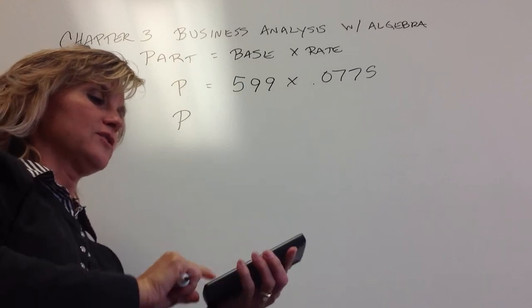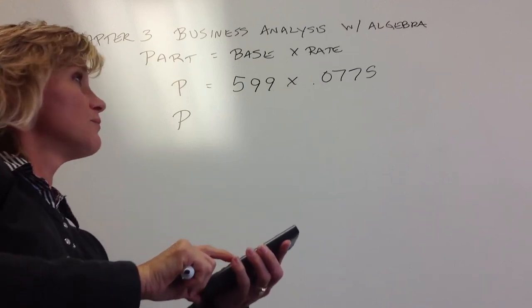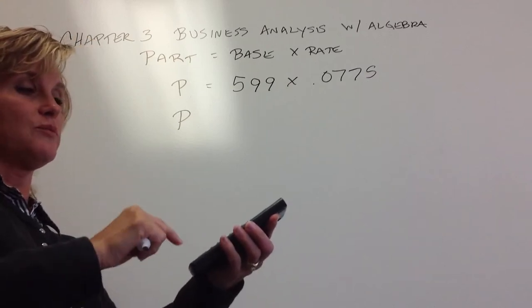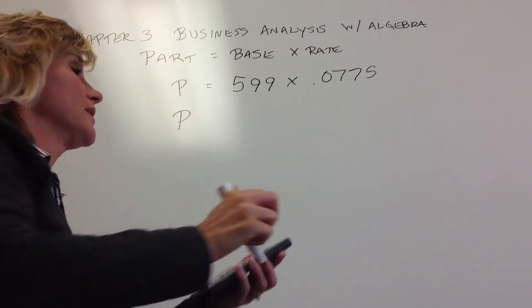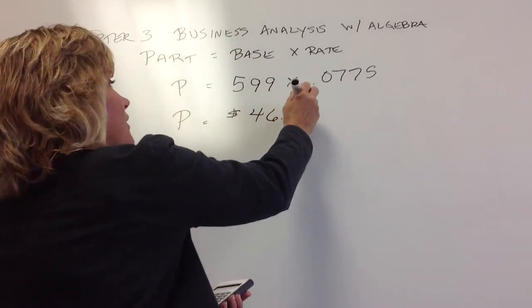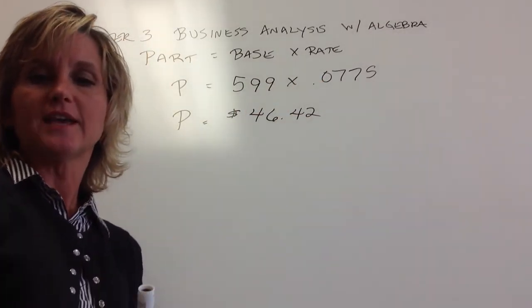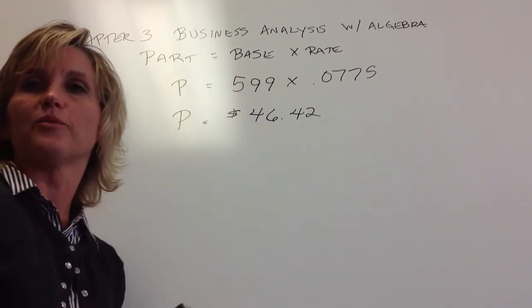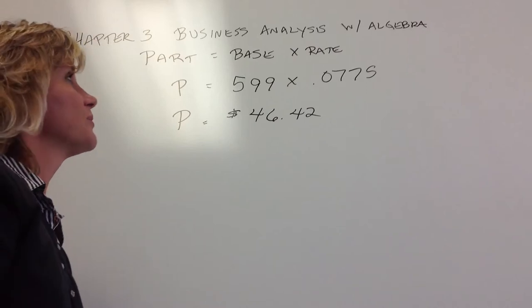But then if you take your $599 and multiply that by 0.0775, or 7.75% and then push the percent button, you get tax of $46.42. So then that tax is actually your part, and that would be added back to the price to figure out how much you actually have to pay.